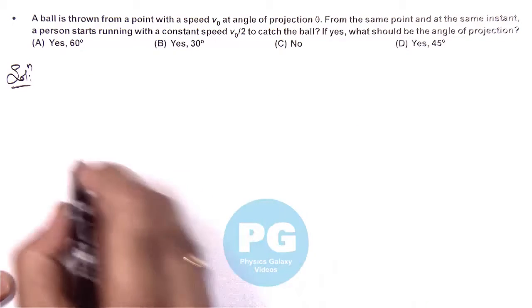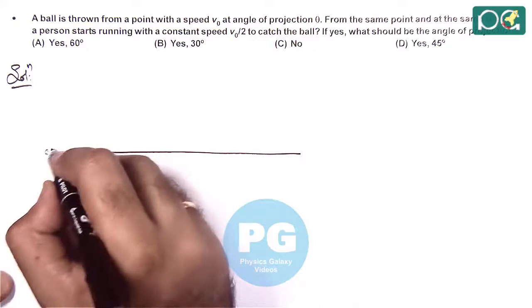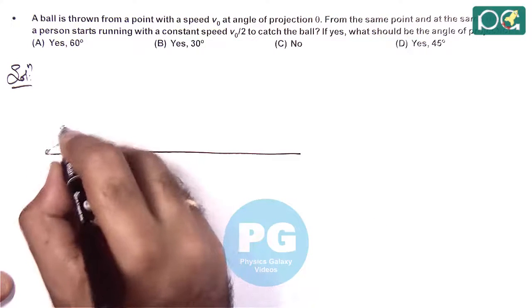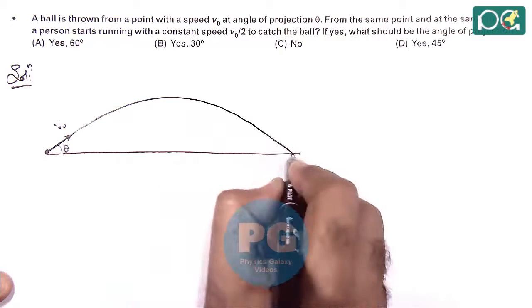So if we visualize the situation, here it is given that a ball is thrown with the initial speed V-naught at an angle theta, which follows a projectile path, finally hitting the ground.